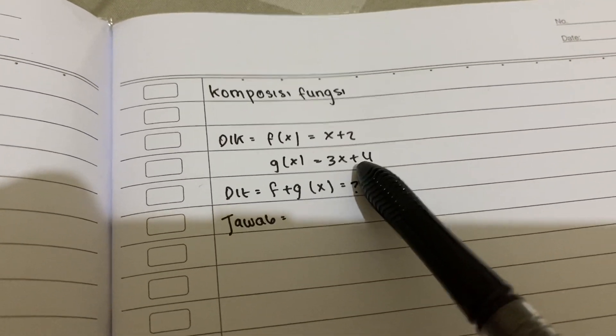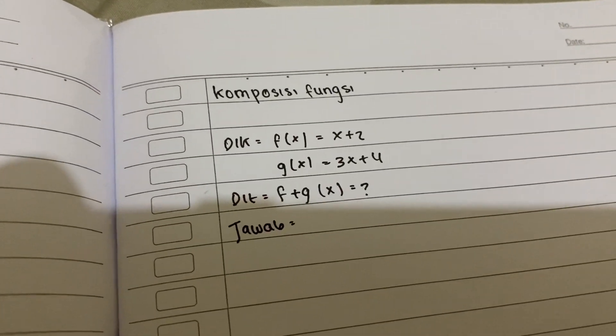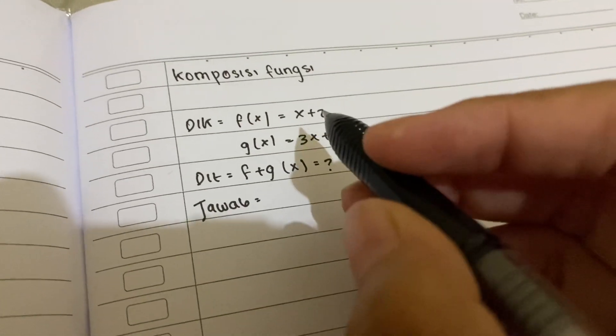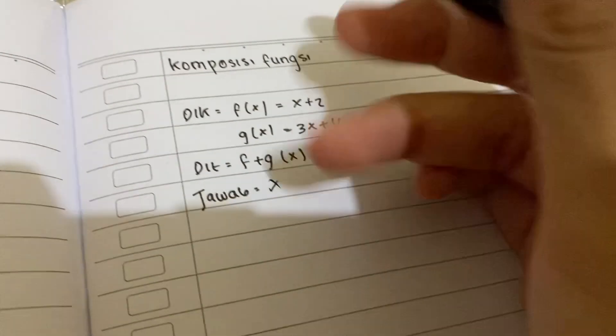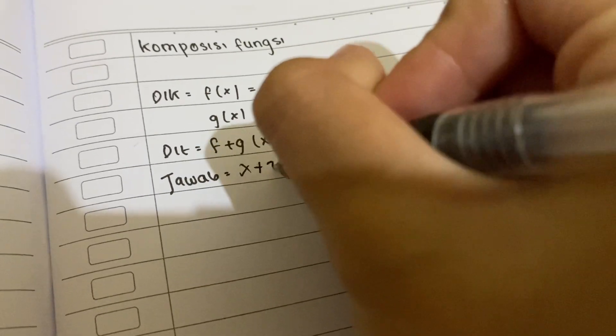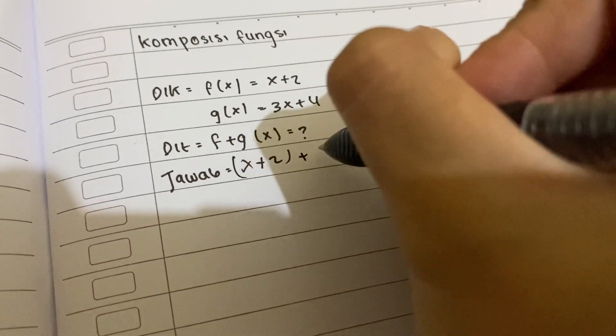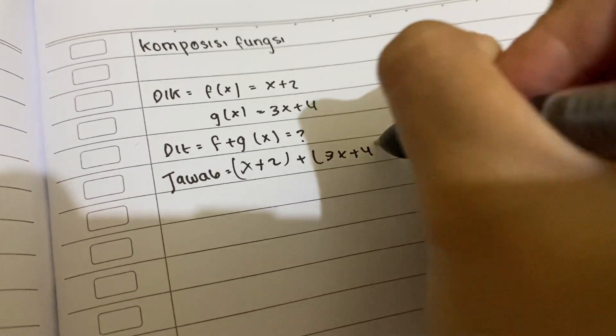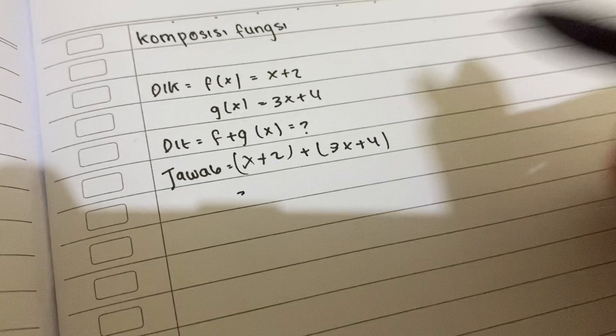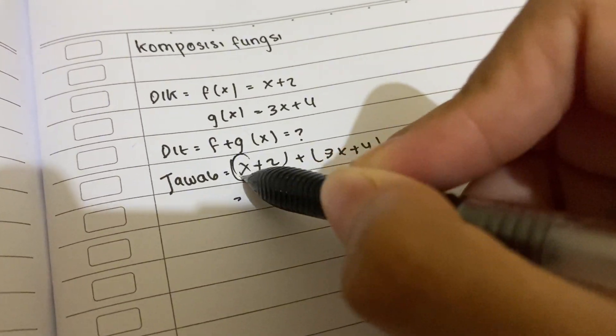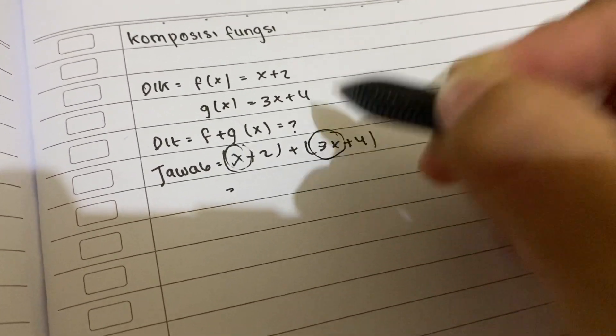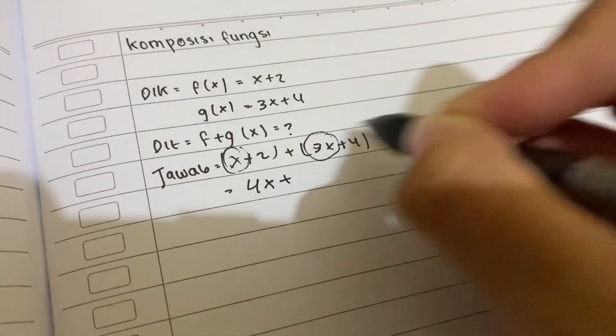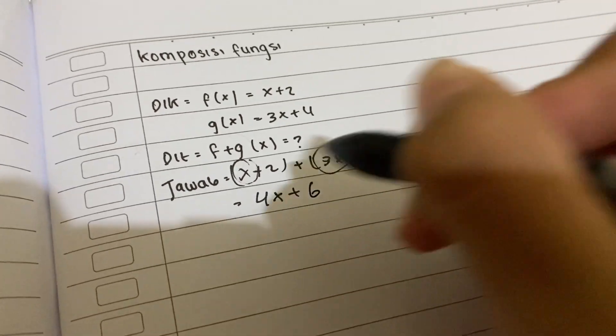Jadi yang pertama kita masukin dulu dari rumus ini yaitu x plus 2 ditambah 3x plus 4. Jadi kita tinggal tambah aja, x tambah 3x sama dengan 4x, plus 2 tambah 4 sama dengan 6. Ini hasilnya.